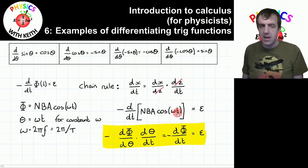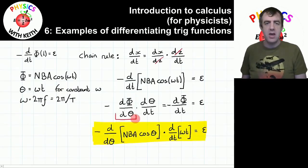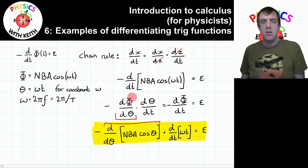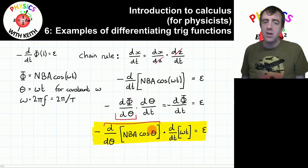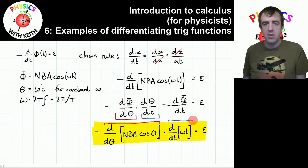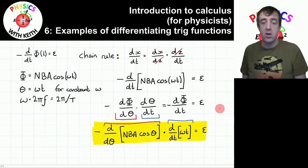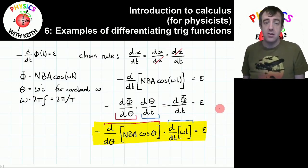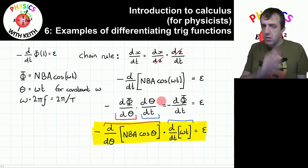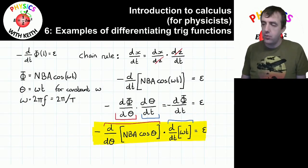Remember, omega t is theta. So this term here becomes this term here — I've written phi in terms of theta, nothing wrong with that. And this term here is written in terms of omega t, nothing wrong with that. Omega t is theta. Now this is much more straightforward to solve.